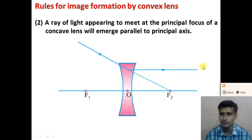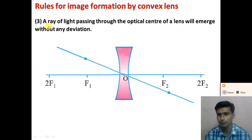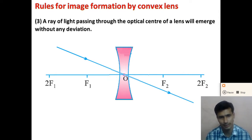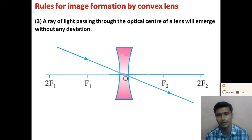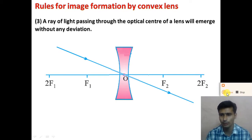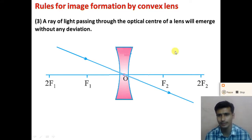The third rule for image formation by a concave lens is: when a ray of light passes through the optical center of the lens, it will emerge without any deviation. This rule is similar to the convex lens. When a ray of light passes through the optical center of the concave lens, the emergent ray is without deviation — it goes in the same direction. These are all three rules for making a ray diagram by a concave lens.